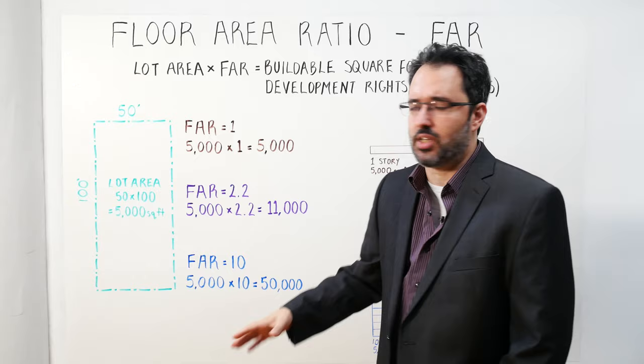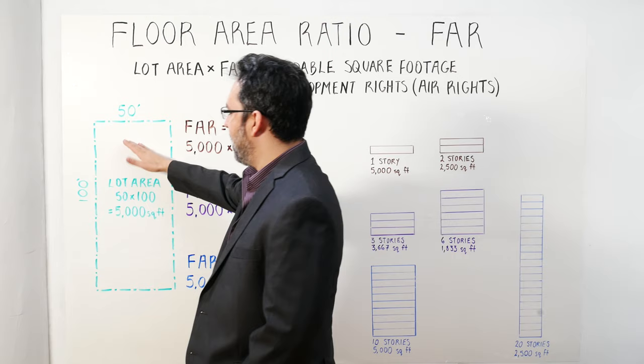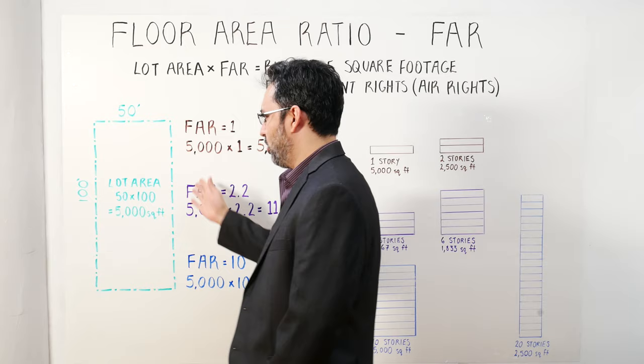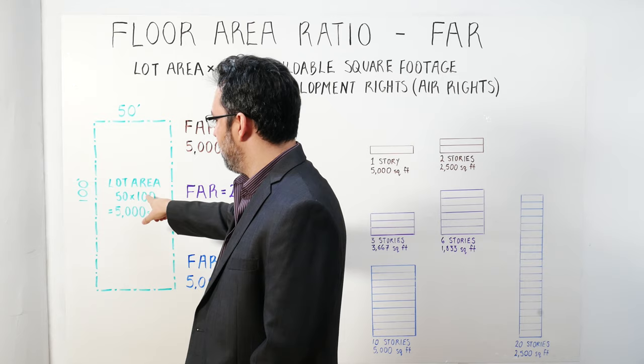Let's run through an example. Let's say you have a lot area that's 50 by 100. I'm in New York City — the most common lot size here is 25 by 100, so maybe you have two lots or a double-size lot. That gives you 50 by 100, which is 5,000 square feet.